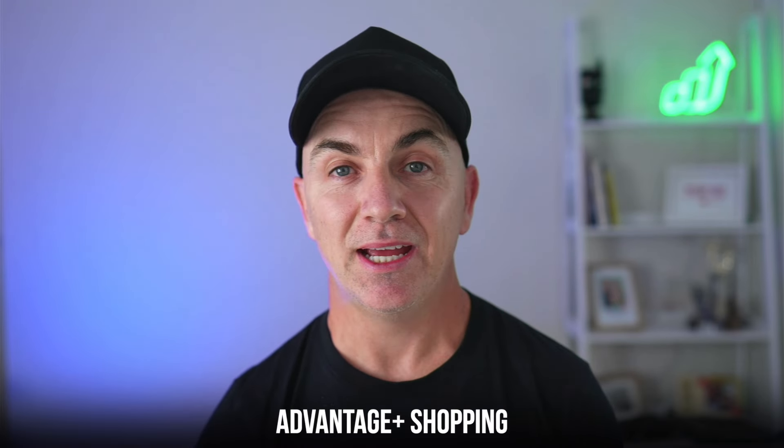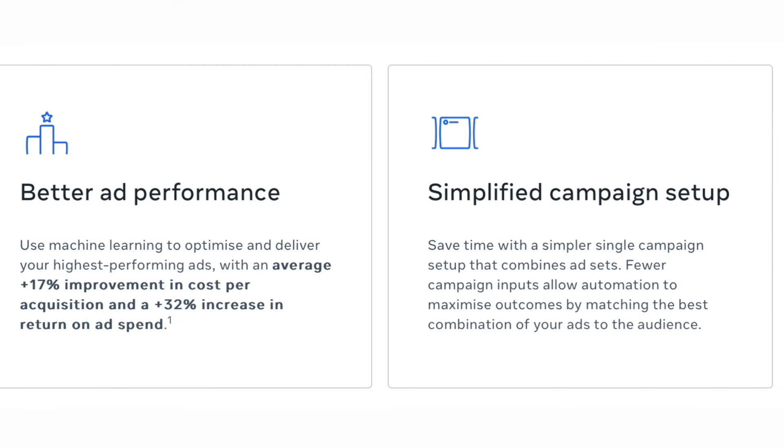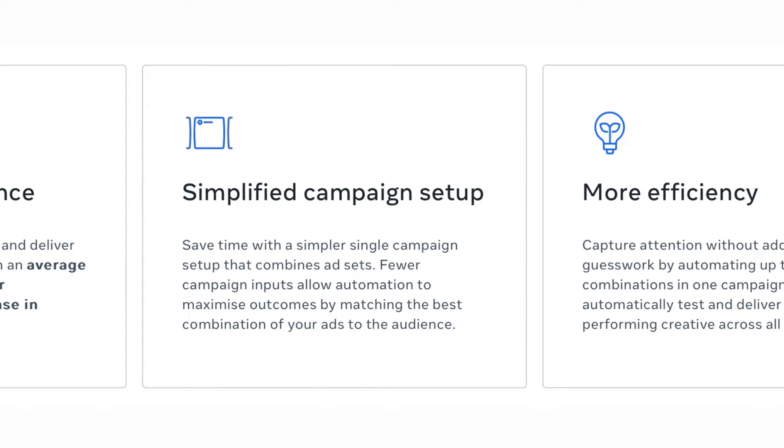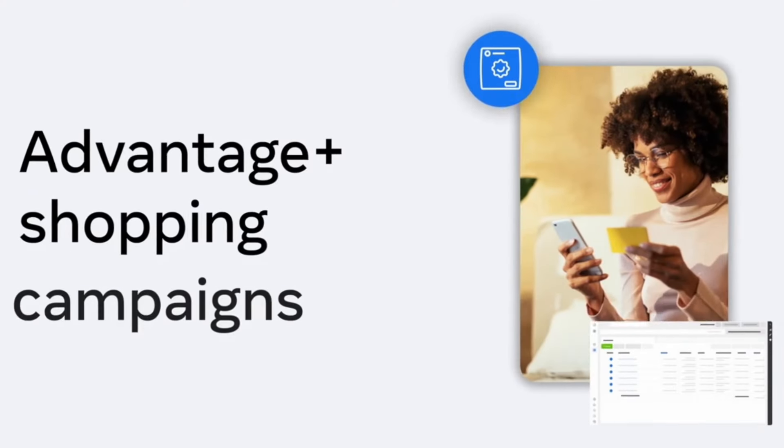We're going to use a campaign type called Advantage Plus Shopping. Basically it's Facebook's AI engine — it captures all the data from across millions of ad accounts and billions of visitors and throws it into an AI that helps you bid on ads. It's super smart and super fast. What we're going to do now is throw in your product data directly into Facebook and say: advertise these products to the people who are most likely to buy them. That's called Advantage Plus Shopping.